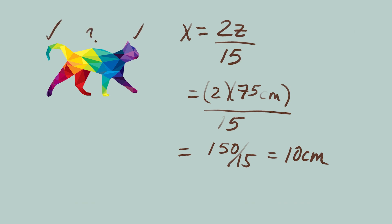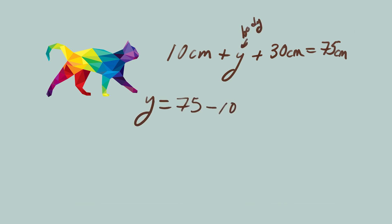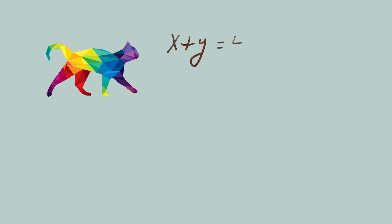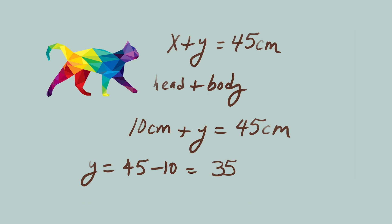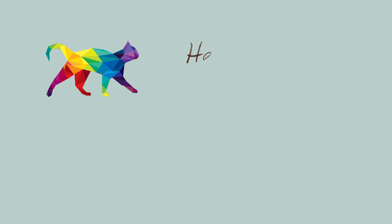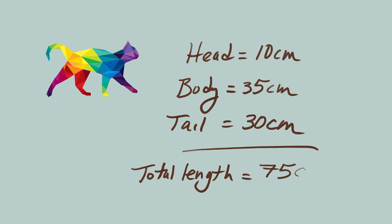So now we know the head and the tail, and all that's left is the body. 10cm plus y plus 30cm equals 75. The body equals 75 minus 30 minus 10 equals 35cm. We also could have used our earlier equation: x plus y equals 45cm — that stood for head plus body equals 45cm — so 10cm plus y equals 45cm, y equals 45 minus 10 equals 35cm. To summarize: Oliver's head is 10cm, his body is 35cm, his tail is 30cm, and he adds up to 75cm in length.